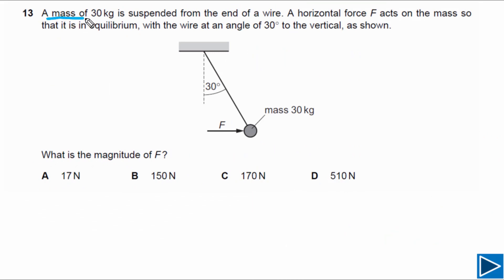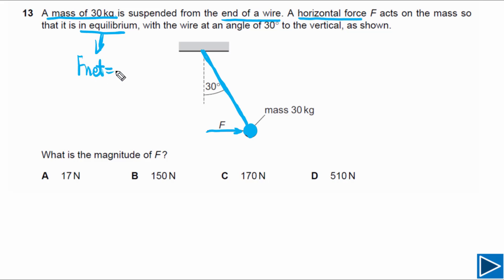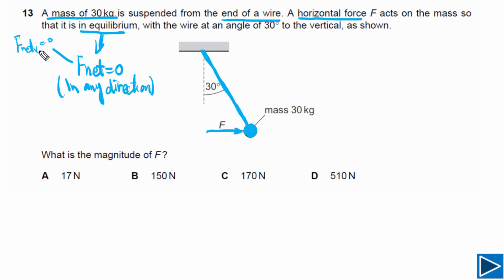For question 13, a mass of 30 kg is suspended from the end of a wire with a horizontal force F acting on it and the system is in equilibrium. Equilibrium means the resultant force in any direction is zero — forces along the horizontal must sum to zero, and forces along the vertical must also sum to zero.